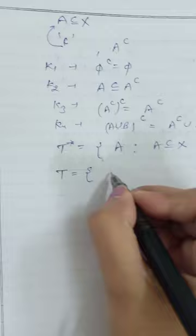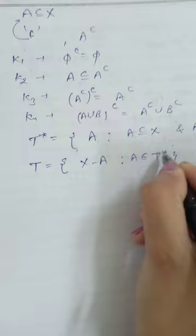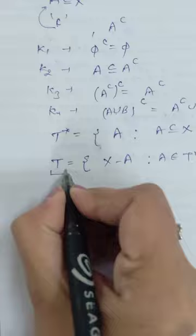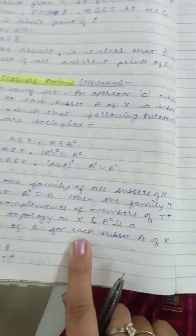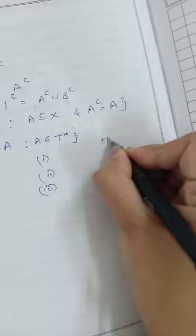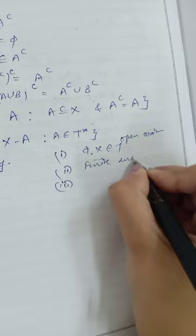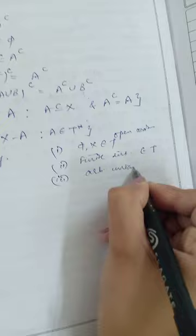We define a new family T as the collection of complements of members of T*, that is, complements of sets A where A belongs to T*. We have to prove that this T defines a topology on X. For that, we must prove three open axioms: first, φ and X belong to T; second, a finite intersection of members of T is again in T; and third, an arbitrary union of members of T is again in T.